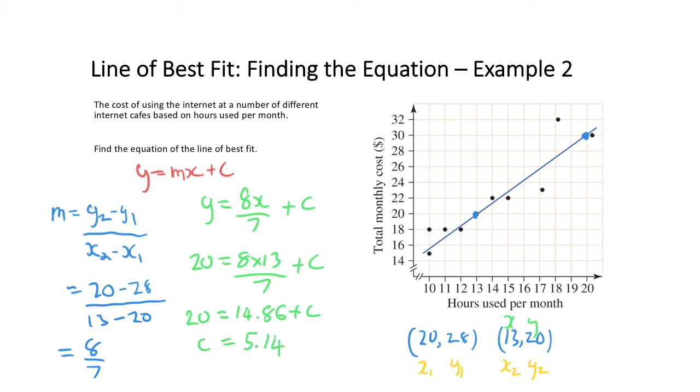So my y-intercept value is going to be 5.14. So the equation of my line of best fit is going to equal y equals 8x over 7 plus 5.14. I can now use that equation for my line of best fit to be able to plug in values to make predictions within my relationship. So that is an example of how to calculate the equation of a line of best fit within a scatterplot.